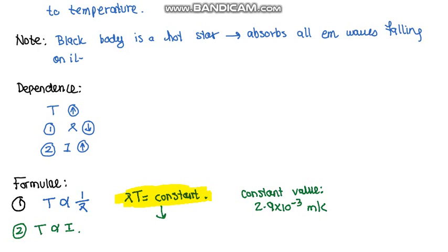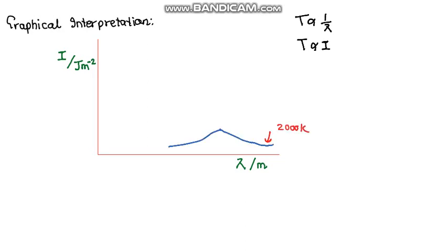Now let's see the graphical representation of Wien's displacement law. Let's say I assume the graph of intensity versus wavelength. We already know that temperature is inversely proportional to lambda and temperature is directly proportional to intensity. Let's assume a random curve at a certain temperature. This curve is at 2,000 Kelvin. So now if I increase the temperature, let's say to 4,000 Kelvin, as the temperature increases, the lambda decreases, so this value of lambda must shift left, and the value of intensity increases, so the maximum point should be over here.